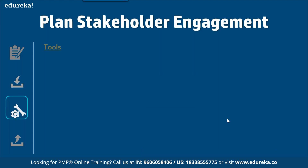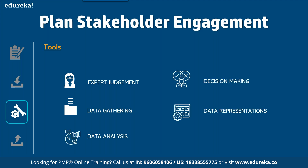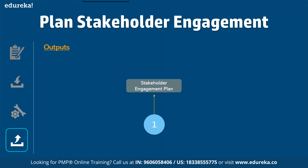The tools for plan stakeholder management are similar to what we saw before: expert judgment, data gathering, data analysis, decision making, data representation, and meetings. The output for this process is the stakeholder engagement plan — that is the only output produced in this case.